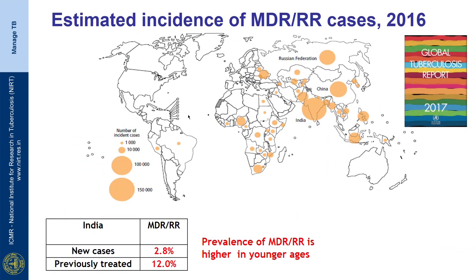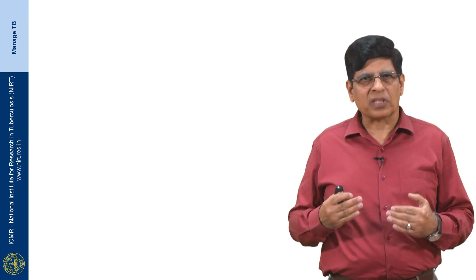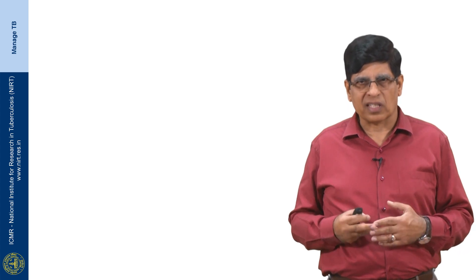India recently carried out a national-level survey to estimate prevalence of drug resistance in TB cases, finding that 2.8% of new cases and 12% of previously treated cases had either multidrug-resistant TB — resistance to both INH and rifampicin — or resistance to rifampicin alone. Although the overall proportion of MDR/RR-TB has not increased over the years, data shows higher prevalence of drug resistance in younger age groups, indicating active transmission is ongoing in the community, and higher proportions should be expected in coming years.